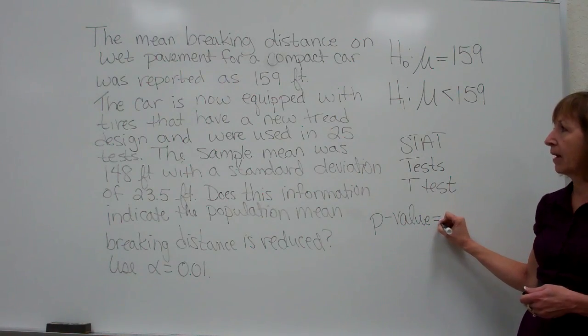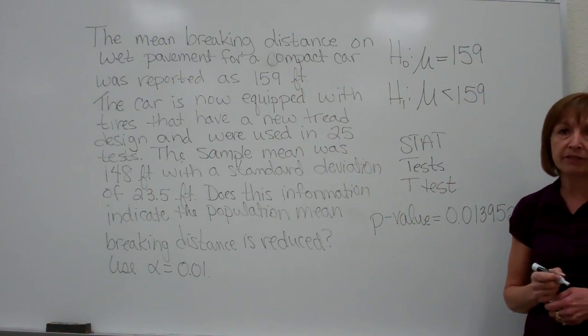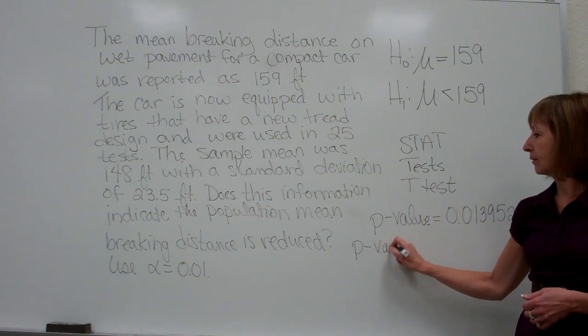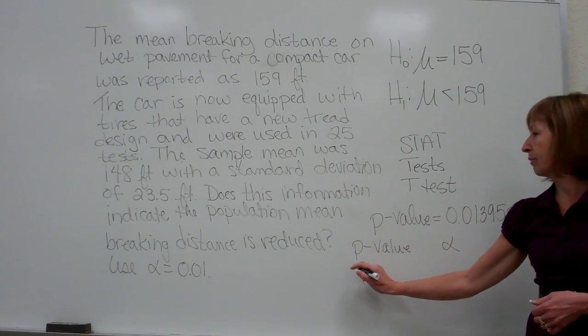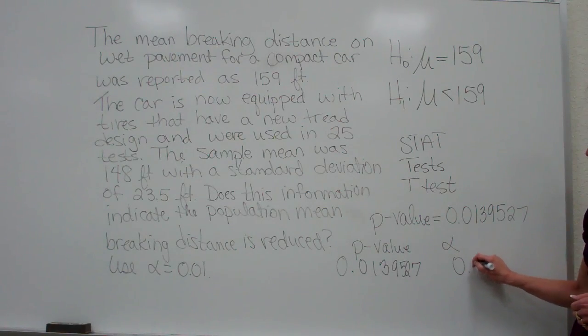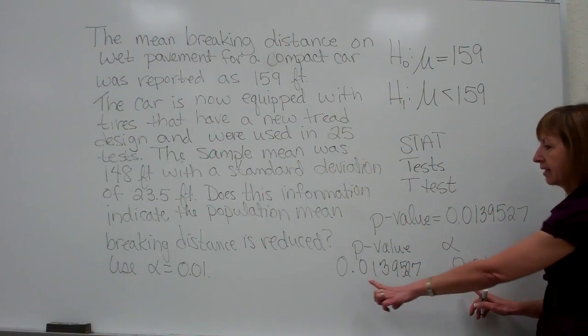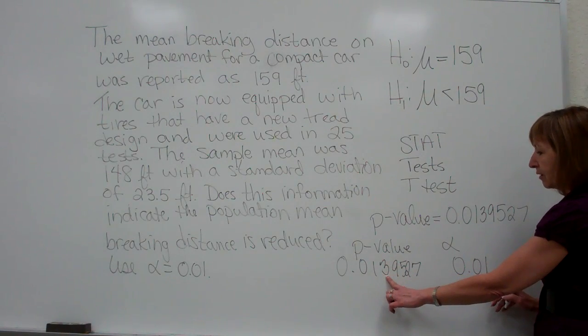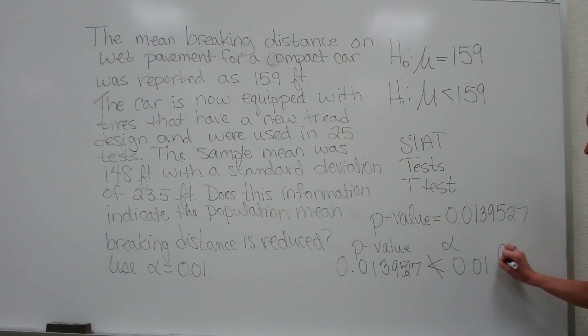And on this the p-value will come out to be 0.0139527 in the reported p-value from that statistical test done with the calculator. Now remember, you want to compare the p-value with the alpha. So I always like to put the p-value on the left and the alpha number on the right. My p-value number from the calculator is 0.0139527. My alpha from the statement of the question is 0.01. Now you ask yourself, is the p-value smaller than that? So we have our placements of our decimal. The first place that our decimals do not match, I have a bigger number under the p-value than I do the alpha. So the p-value is not smaller than the alpha. So you cannot reject the null.